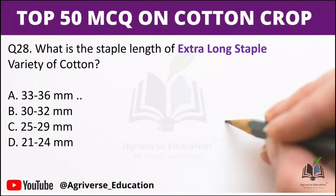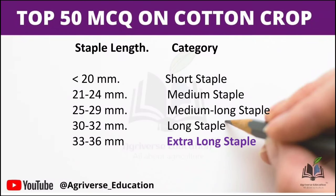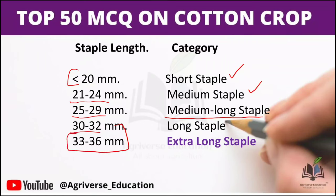Next question: What is the staple length of extra long staple variety of cotton? The right answer is option A, 33 to 36 mm. In detail: below 20 mm is short staple; 21–24 mm is medium staple; 25–29 mm is medium long staple; 30–32 mm is long staple; and 33–36 mm is extra long staple variety of cotton.